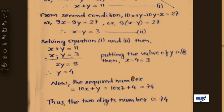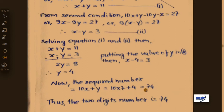Our required two-digit number is 10x plus y. Putting the values: 10 into 7 plus 4 equals 70 plus 4 equals 74. Therefore 74 is our required two-digit number.